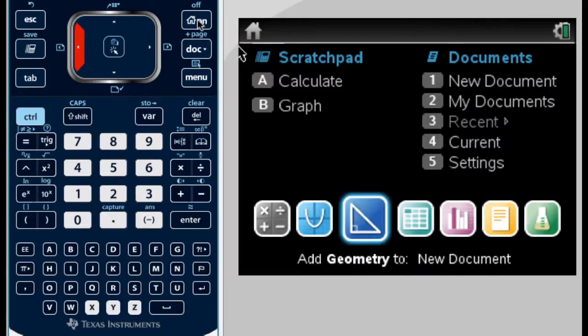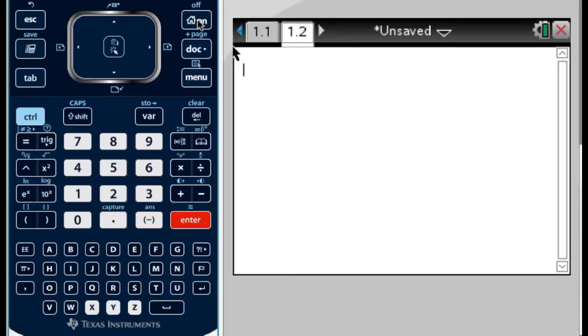So I'm going to add a calculator page and define a function. So f of x, remember you have to do colon equal, so control and then the templates button gets you that. Let's say that we have x squared plus 3x minus 5.